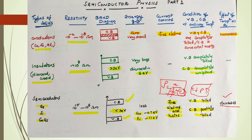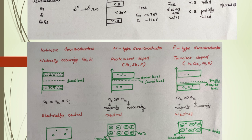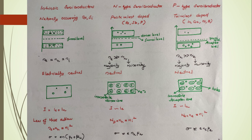Now let's differentiate between intrinsic, n-type, and p-type semiconductors. Intrinsic semiconductors are naturally occurring ones — germanium and silicon are examples. Extrinsic semiconductors are doped semiconductors with added impurities — these are the n-type and p-type semiconductors.